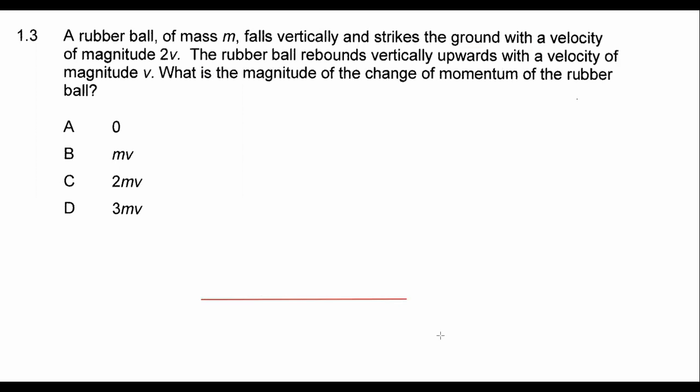So what we have is we've got a rubber ball of mass m falls vertically. Okay, so it falls vertically. And it has a mass of m. And it strikes the ground with a velocity of 2v.